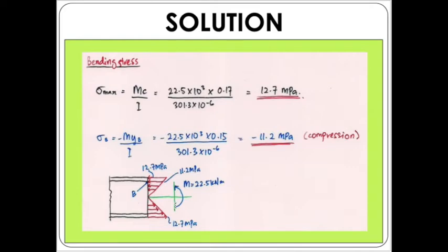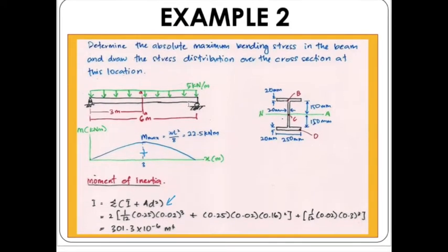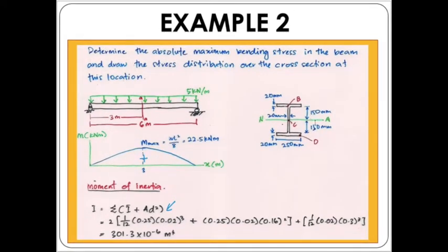Next, we move on to calculating the bending stress. The maximum bending stress is calculated using the maximum bending moment already determined, along with the centroid distance. Since we have a symmetrical section, we divide the height by two, giving us a value of 0.17 m — that is 170 mm — as the y value to use for sigma maximum.